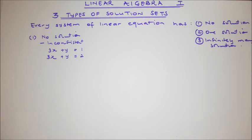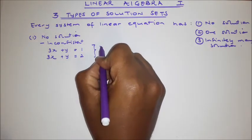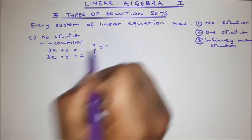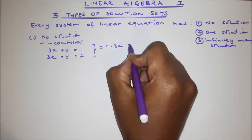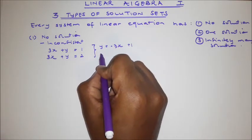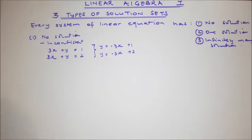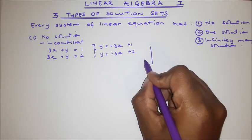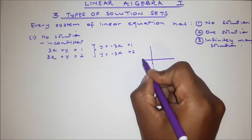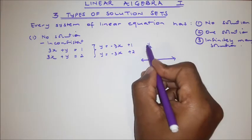Let's tackle this straight on so we can see why this linear system has got no solution. Let's solve for y — that's the easiest route. So y equals minus 3x plus 1, and for the second equation, y equals minus 3x plus 2. So let us see this geometrically. There's a Cartesian plane right there — this is the y-axis, the x-axis.